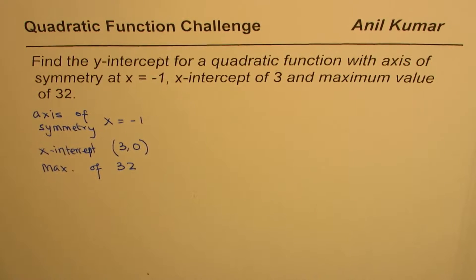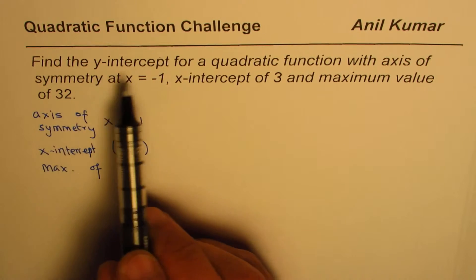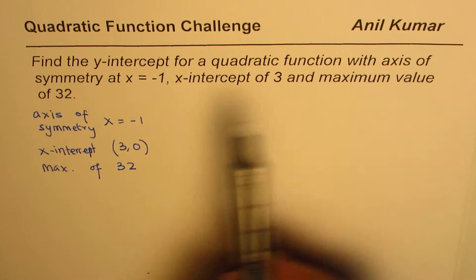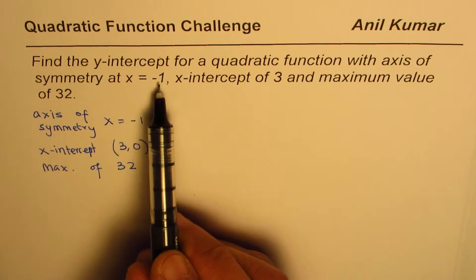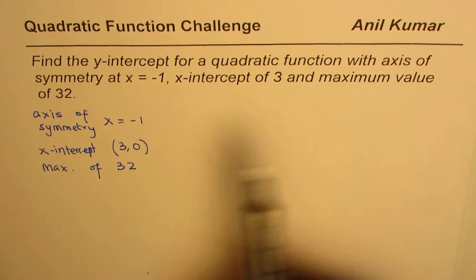I'm Anil Kumar sharing with you an excellent question on quadratic function. In this particular question we need to find the y-intercept for a quadratic function with axis of symmetry at x equals minus 1, x-intercept of 3, and maximum value of 32.